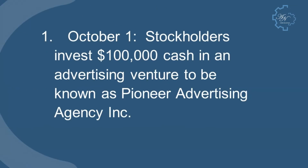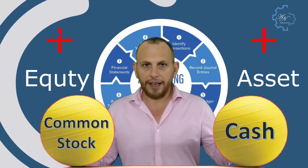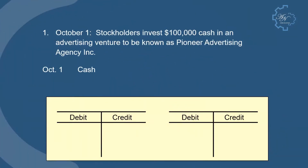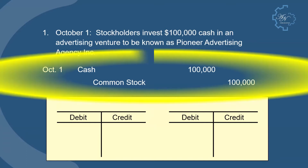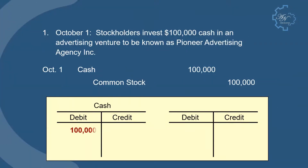The first transaction: on October 1, stockholders invest $100,000 cash in an advertising venture to be known as Pioneer Advertising Agency Inc. We have two accounts — cash and common stock. Cash is an asset and common stock is equity. Cash increases, common stock increases. So the entry is: debit cash, credit common stock. We then post this entry to the ledger with two accounts: cash and common stock.